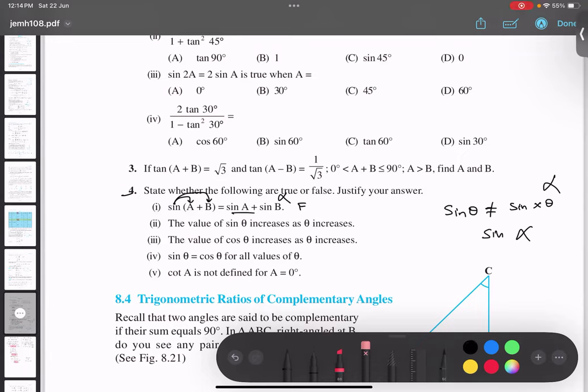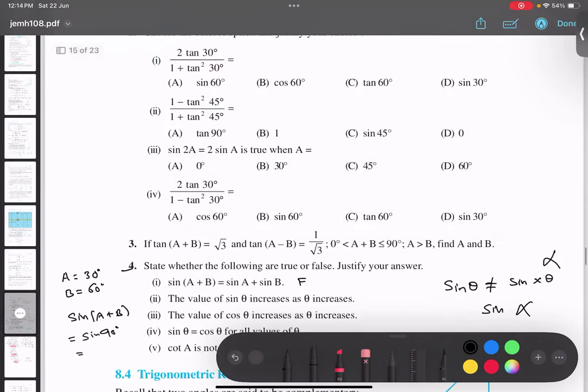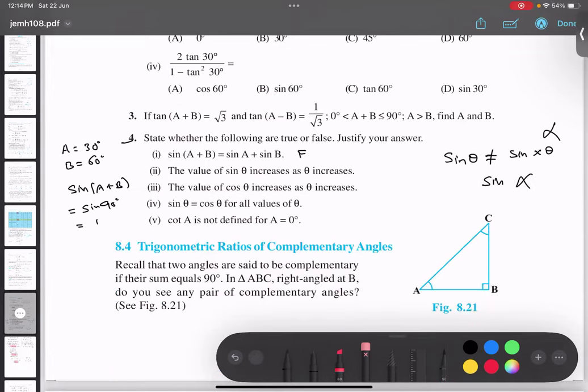Understood this part? Yes. Now if you want to test, you can test also. Take a value as 30 degrees and B value as 60 degrees. Some other value also you can take. Now, sin A plus B is what? Sin 90.